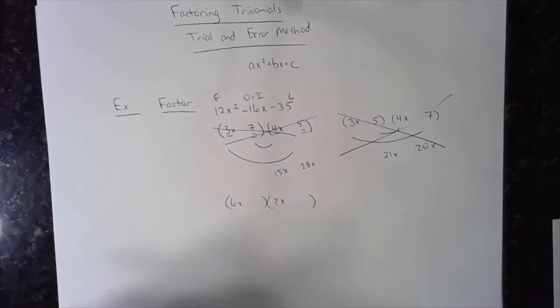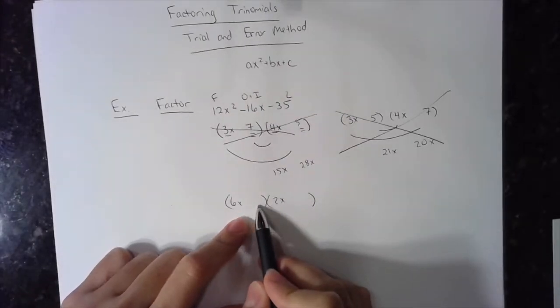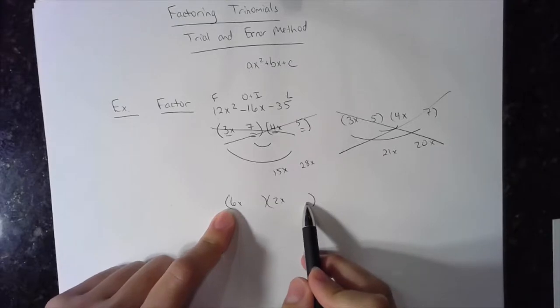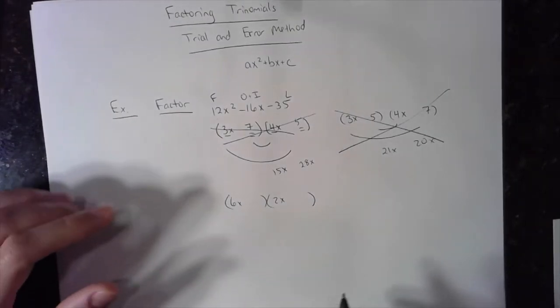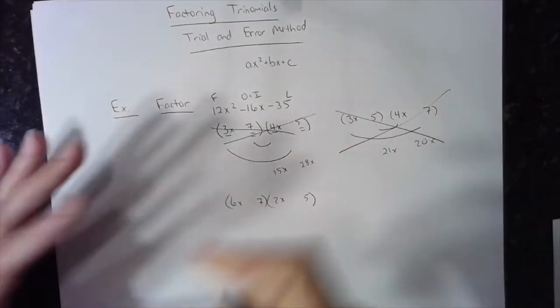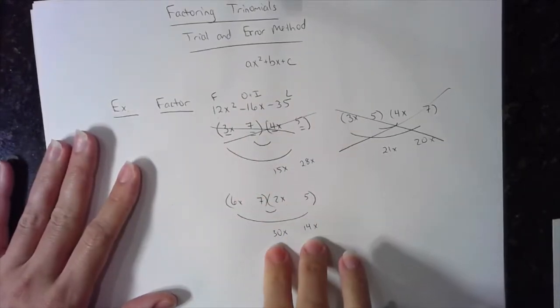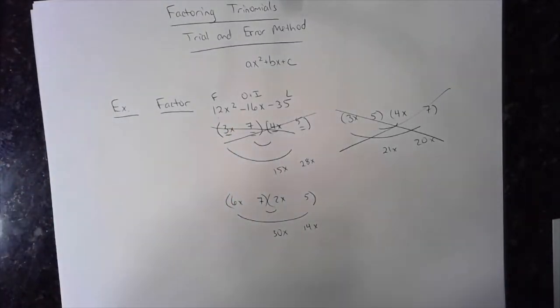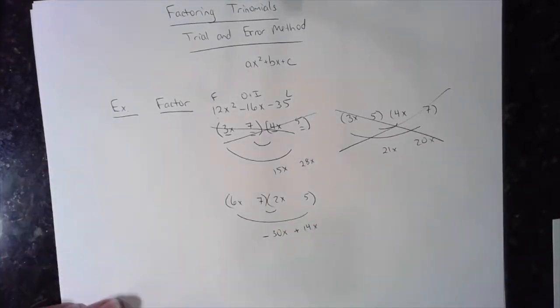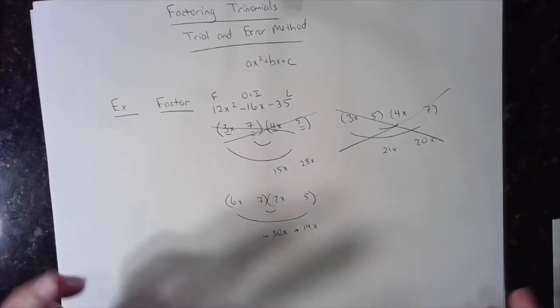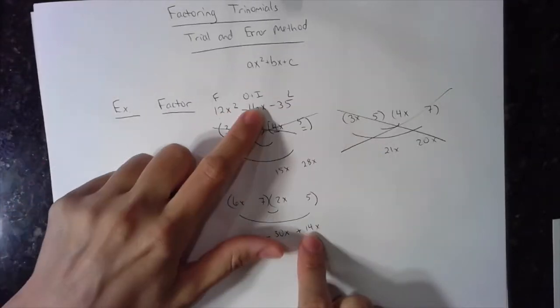I'm going to try a 7 and a 5, but I'm going to think ahead. Where would I put the 7 and where would I put the 5? If I put the 7 here, I'm going to get a 14. If I put the 5 here, I'm going to get a 30. 30 and 14 sounds good to me because I could get 16. 7, 5. Here's my check. Outer is 30x. Inner is 14x. A 30 and a 14 can give me a 16 depending on signs. If I want negative, this guy has to be negative and this guy has to be positive. This is the only way that these two terms are going to add together to give me negative 16x. Negative 30x plus 14x is negative 16x.